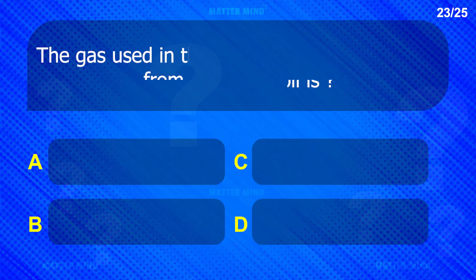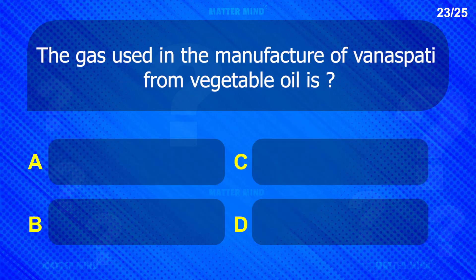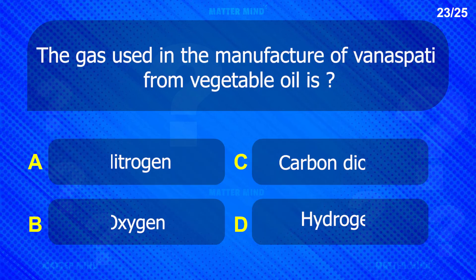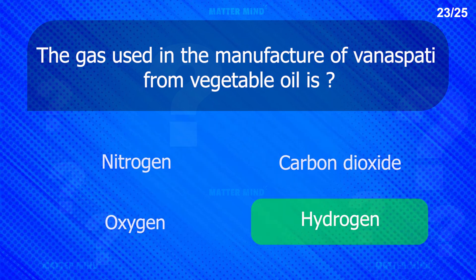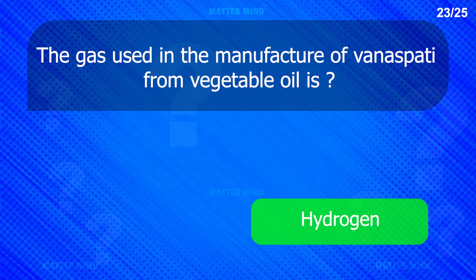The gas used in the manufacture of vanaspati from vegetable oils is hydrogen.